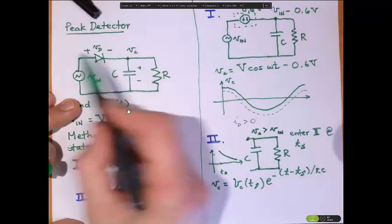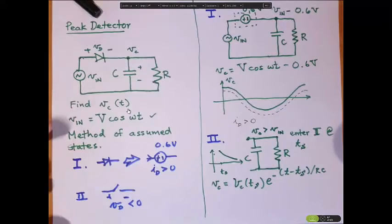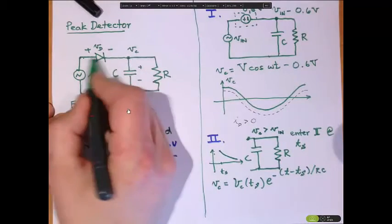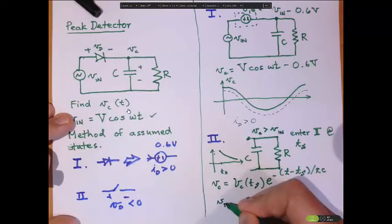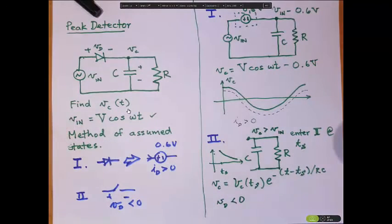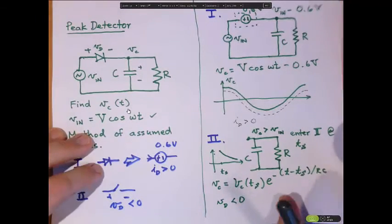Because that's the voltage difference, right? It's Vc minus Vn is the - sorry, Vn minus Vc is the voltage drop and that has to be less than zero. Vd has to be less than zero for us to be in the state where the diode is back biased and therefore non-conducting.